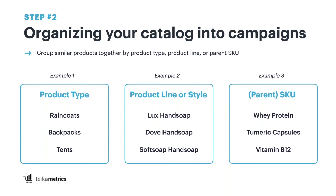Step two: once you've defined what to advertise, organize that section of your catalog. Start with similar products and group them by product type — for example, if you sell a whole bunch of different products, you may want to separate out raincoats versus tents, or by specific product lines, styles, or parent SKUs. This is especially useful for sellers with many variations, such as shoe or clothing sellers. We recommend pulling this up in Excel, laying out your inventory, and creating additional columns to break down your product types and categories.